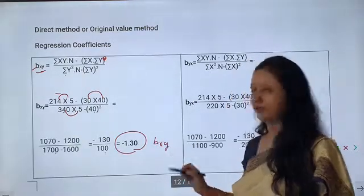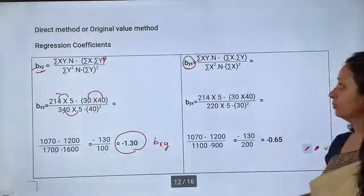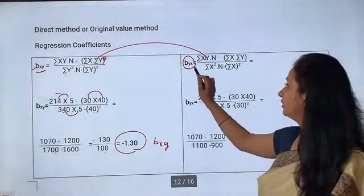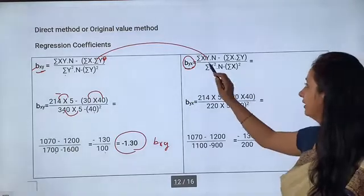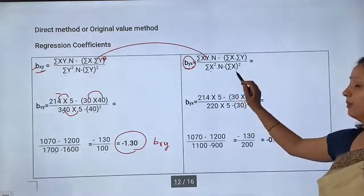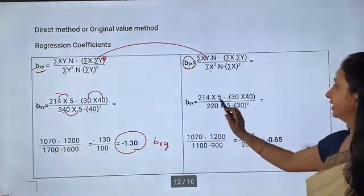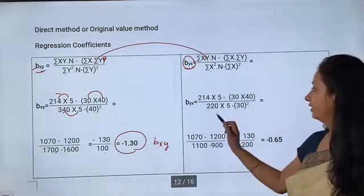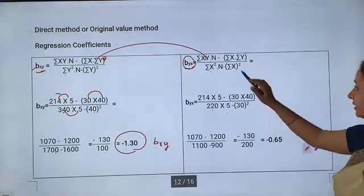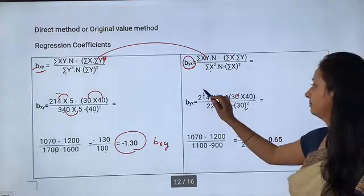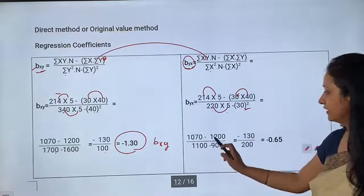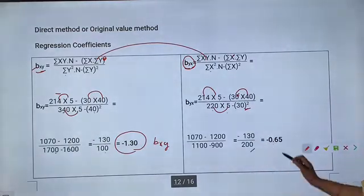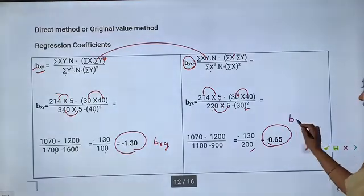Next regression coefficient byx formula: the numerator is the same — (Σxy × n − Σx × Σy). In the denominator, the last variable's values come: (Σx² × n − (Σx)²). Substituting: (1070 − 1200) / (1100 − 900) = −130/200 = −0.65. That is byx. So both regression coefficients are found.